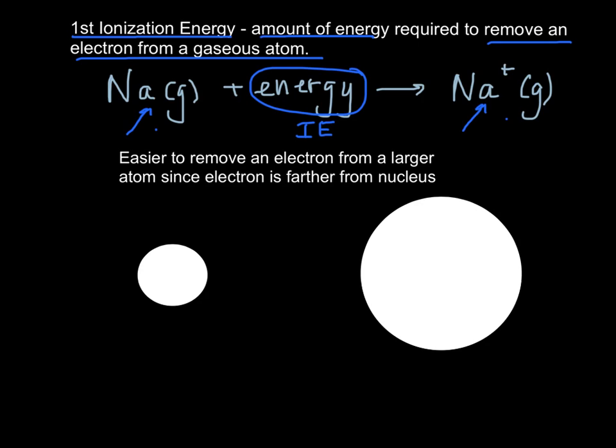It's easier to remove an electron from a larger atom because the electron is farther from the nucleus. In a little atom, the electron is pretty close. In a bigger atom, the electron is farther away. So it's farther away from the nucleus, which is attracting it, so it's easier to remove it. Larger atoms have smaller ionization energies.